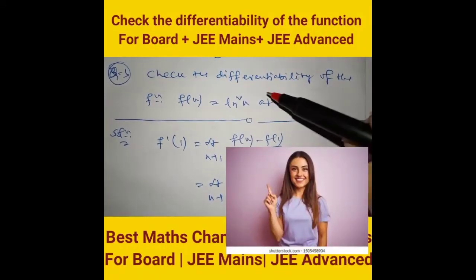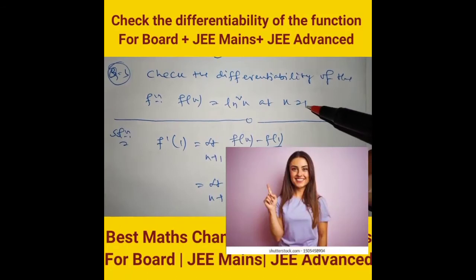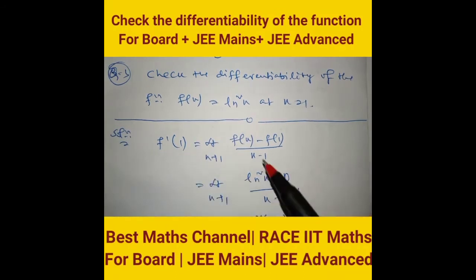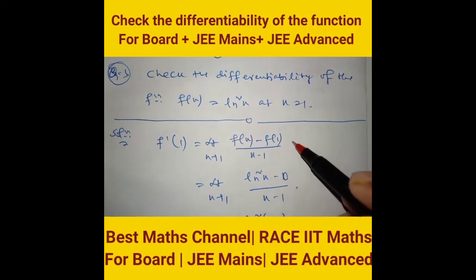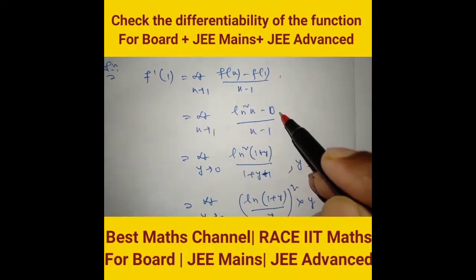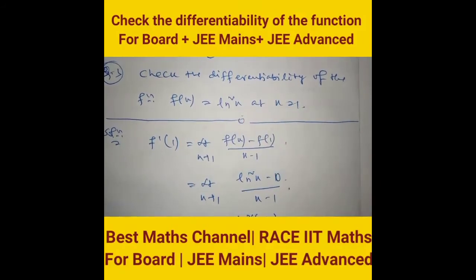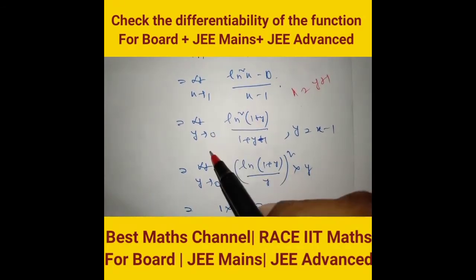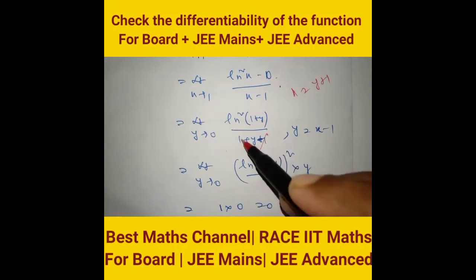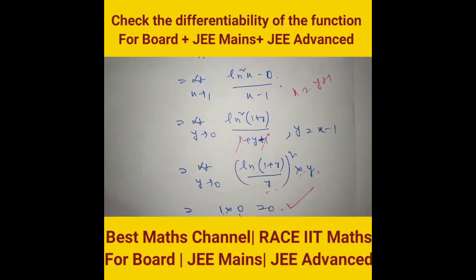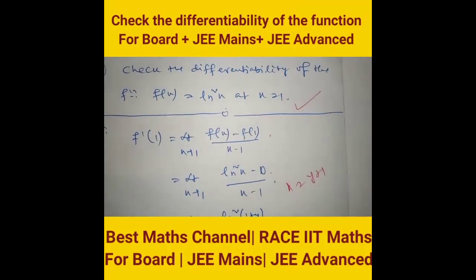Check differentiability of f(x) = ln²x at x = 1. f'(1) = limit as x → 1 of [f(x) − f(1)] / (x − 1). f(1) = ln²(1) = 0. Substituting y = x − 1 so x → 1 means y → 0, and multiplying numerator and denominator by y, the limit evaluates to a finite value of 0. Therefore f is differentiable at x = 1.